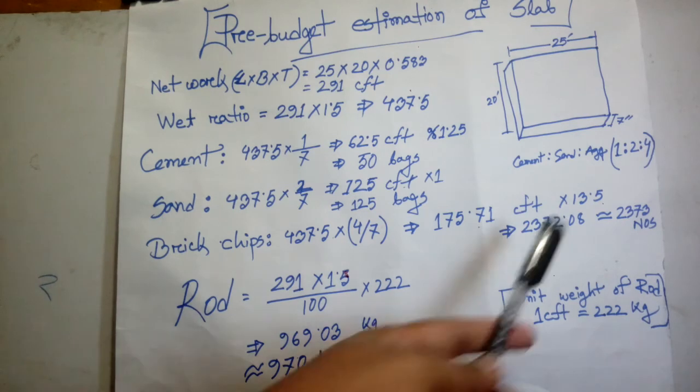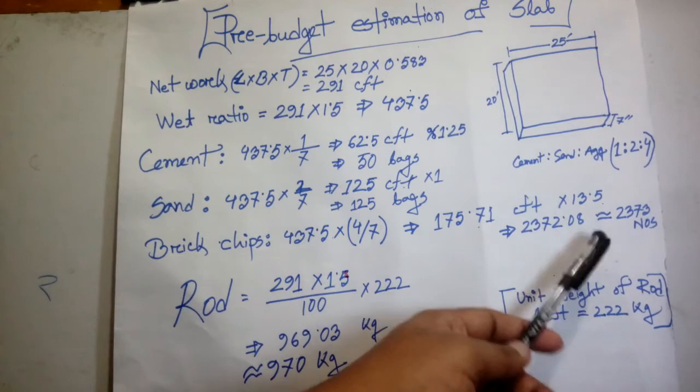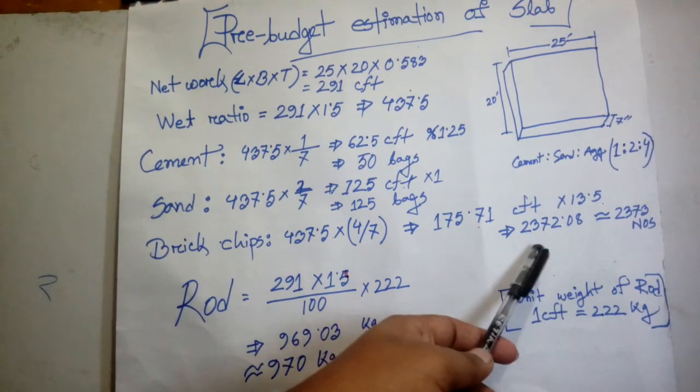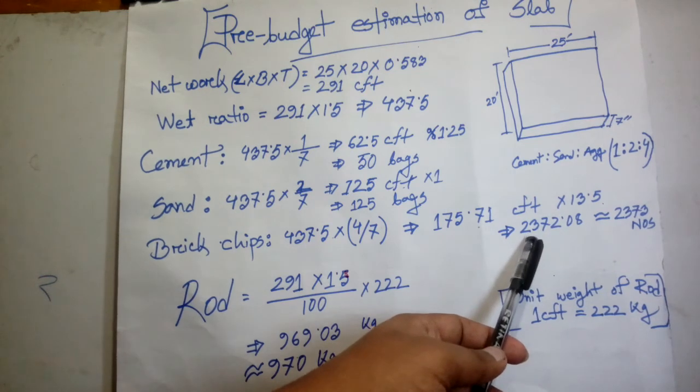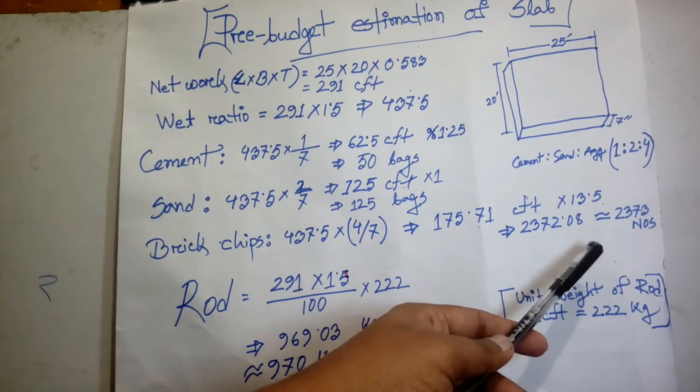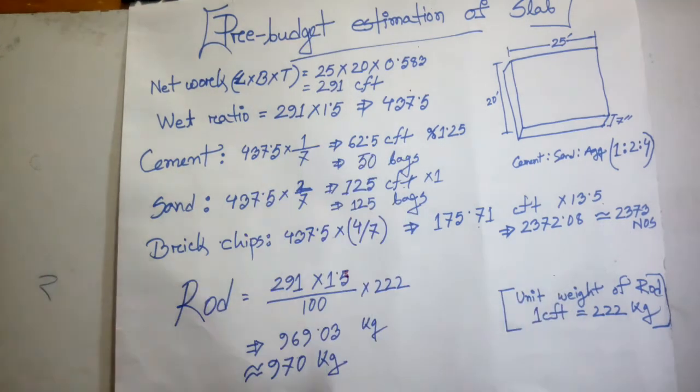So for brick chips, we multiply 175.71 by 3.5 T1, which equals 2372.08 kg. That's the total brick chips requirement. Now to measure the reinforcement cost, we need to calculate that separately for the pre-budget.